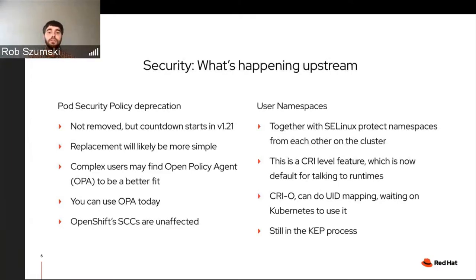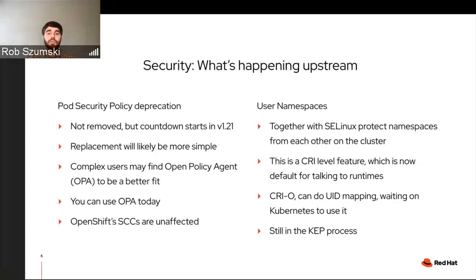The last big upstream security change is user namespaces. This is a kernel-level construct that's made its way into Linux. Together with SELinux, it helps protect your namespaces from each other on the cluster. In the CRI — the container runtime interface for Kube — this is now present, which is the default for talking to runtimes. With CRI-O, which we use in OpenShift, it can do the user ID mapping in and out of the container, which is what actually performs that user namespacing. We're waiting on Kubernetes to roll that out, and then it'll make its way down into OpenShift. The KEP in upstream parlance is still moving forward — some of our engineers are pushing that.